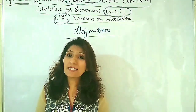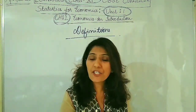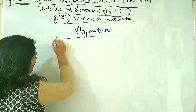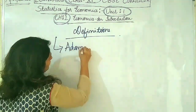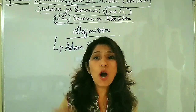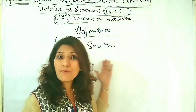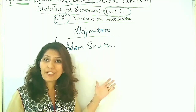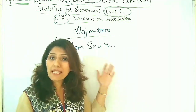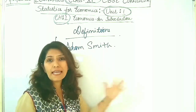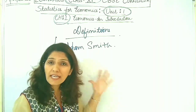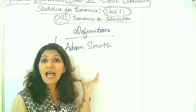The first economist who gave the first definition of economics in a proper form was Adam Smith. If we trace the history of economics, we have to go long back to the year 1776 when Adam Smith wrote a book, An Inquiry into the Nature and Significance of Wealth of Nations. Adam Smith is the economist who gave the first proper definition of economics.